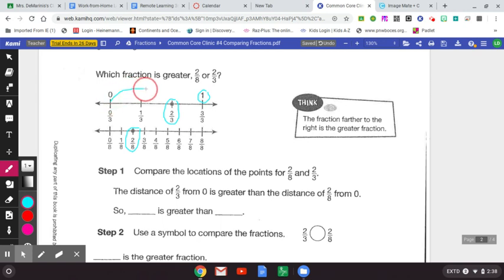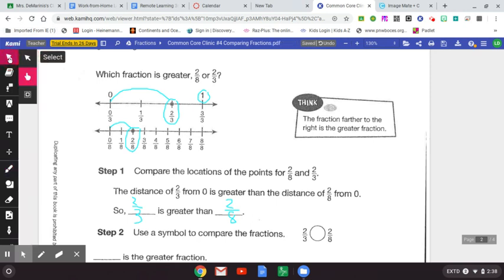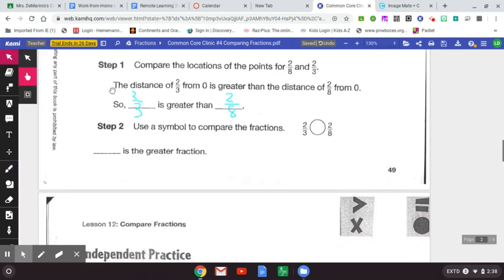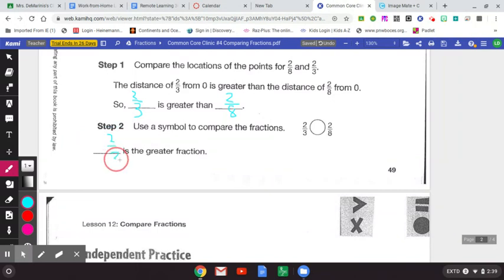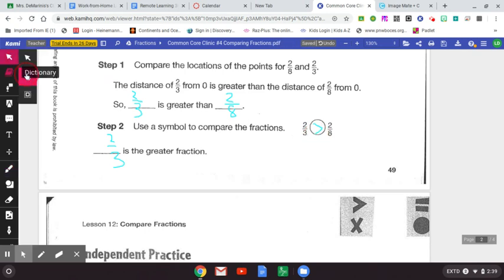The distance of two-thirds from zero is bigger. It's greater and closer to one than the distance of zero from two-eighths. So we can say here that two-thirds is greater than two-eighths. And we can write that in a number sentence too now, remembering our symbols, the symbol to compare fractions. Since two-thirds is greater, two-thirds is greater, we say two-thirds is greater than two-eighths.